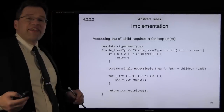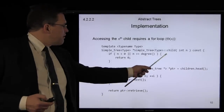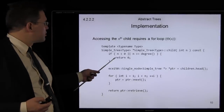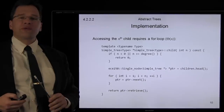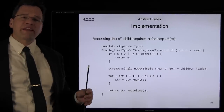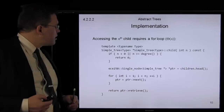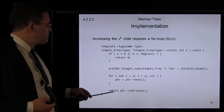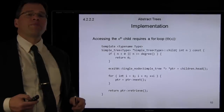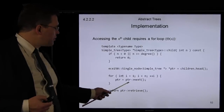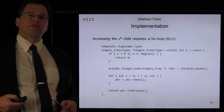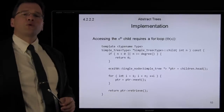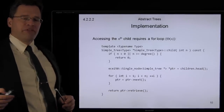If we want to access the nth child and it doesn't exist — if n is less than zero or greater than or equal to the degree — we simply return zero, indicating that child does not exist. Otherwise, we grab a pointer to the head of the linked list and iterate n-1 times through it, each time incrementing the pointer by one. Finally, when we've gotten to the nth element, we return what it's storing, which is the address of the nth child. Here n is going from zero to n-1.